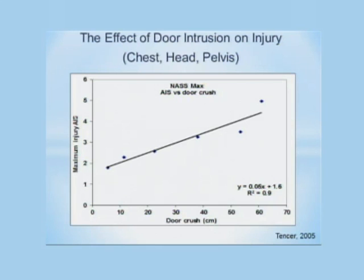This is a plot of the maximum injury AIS — the abbreviated injury score — as plotted against door crush, which is the amount of intrusion of the door into the occupant space. There's just a very direct correlation. So the way to prevent these types of injuries from a side impact point of view is to move the occupant away, reduce the amount of door crush, and hopefully reduce the injury severity.